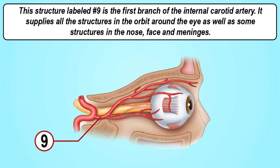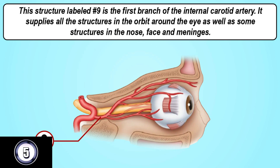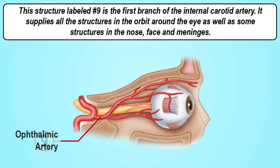This structure labeled number nine is the first branch of the internal carotid artery. It supplies all the structures in the orbit around the eye as well as some structures in the nose, face, and meninges. The answer is the ophthalmic artery.